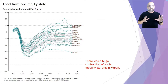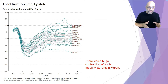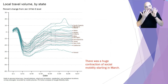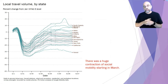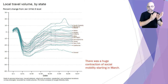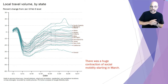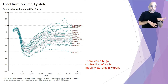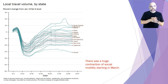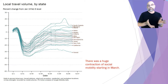We can quantify this shutdown — this closing down of social behavior — using data from our mobile phones, which track our movements. Google provides this data. This shows all 50 states, and I've highlighted some of them: the amount of movement of people around their communities starting in March up until the present. You can see a huge contraction of social mobility in March, getting all the way down to almost a 40% decline in movement — that's New York down there in April. Some states not nearly as much, and then things started opening up again to varying degrees. You can see the Sturgis Motorcycle Rally in South Dakota in August.